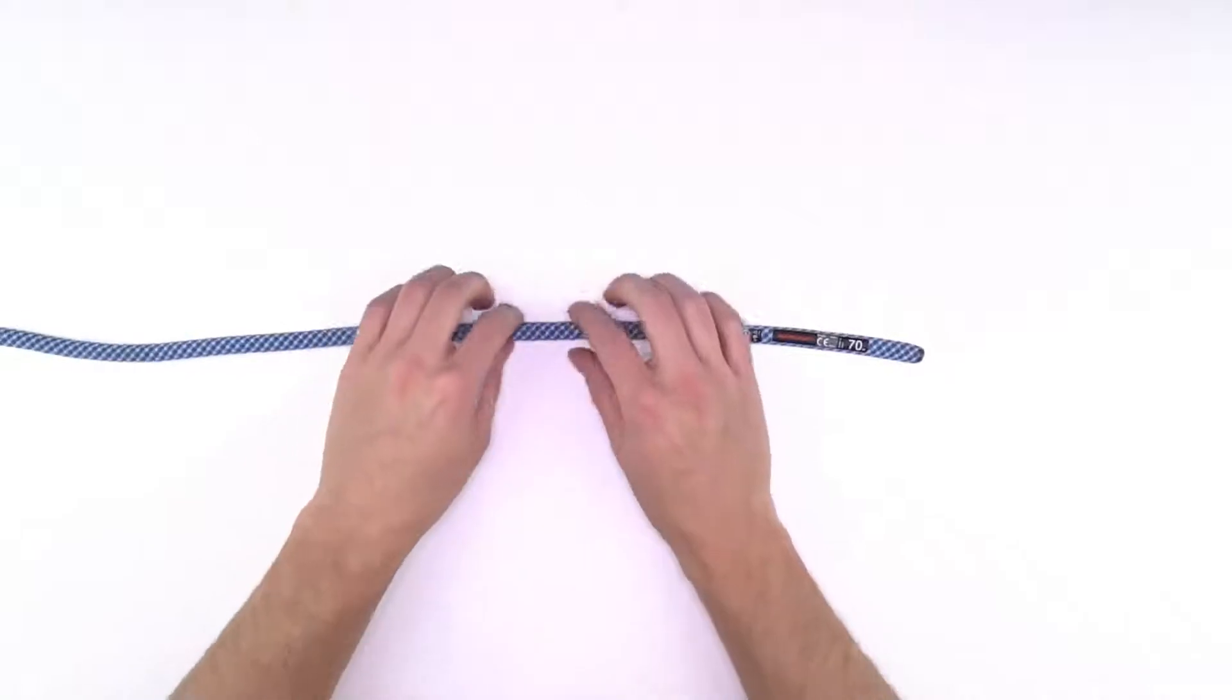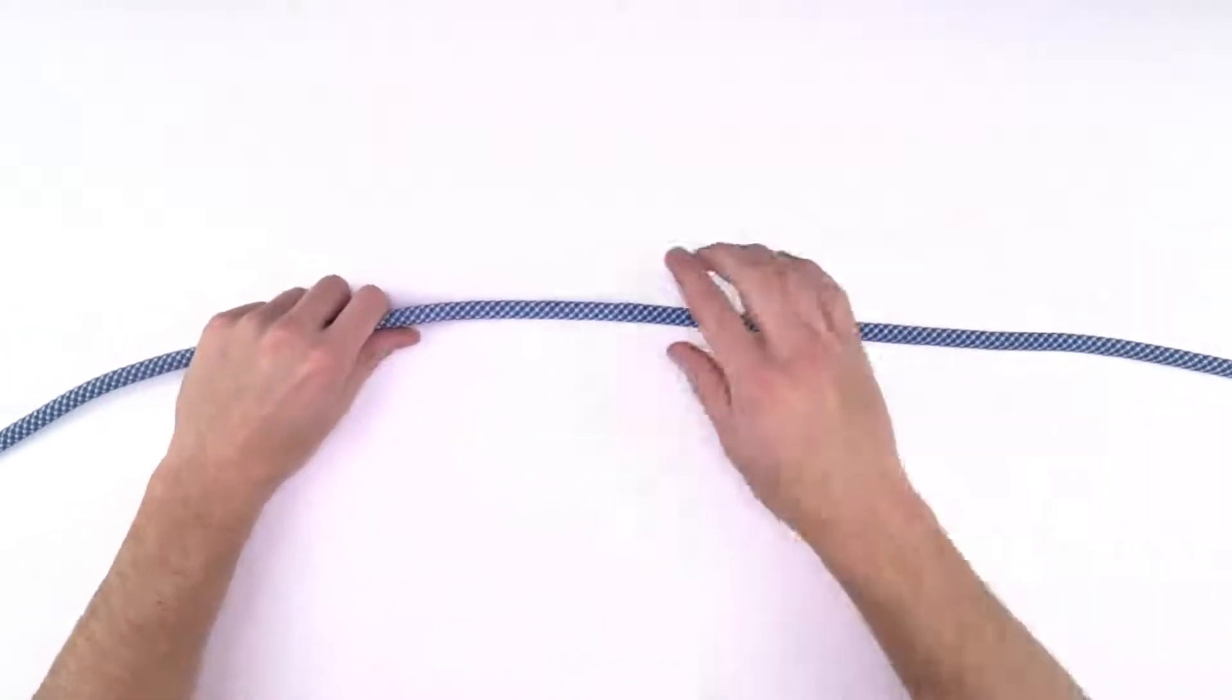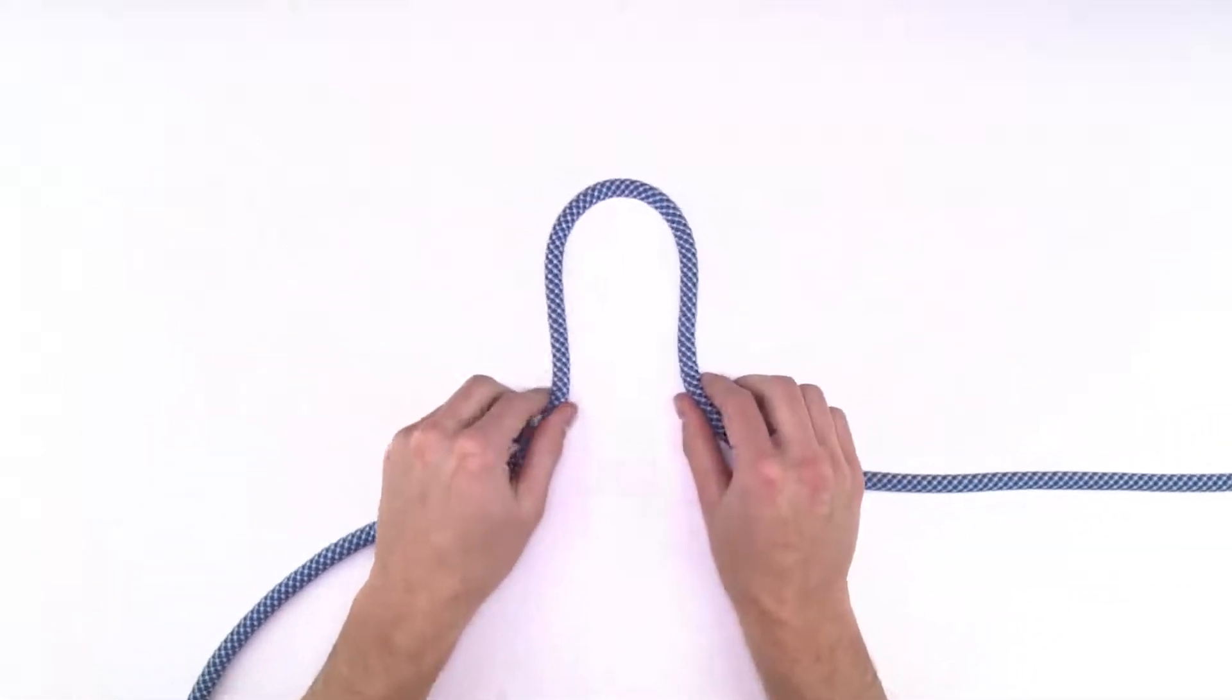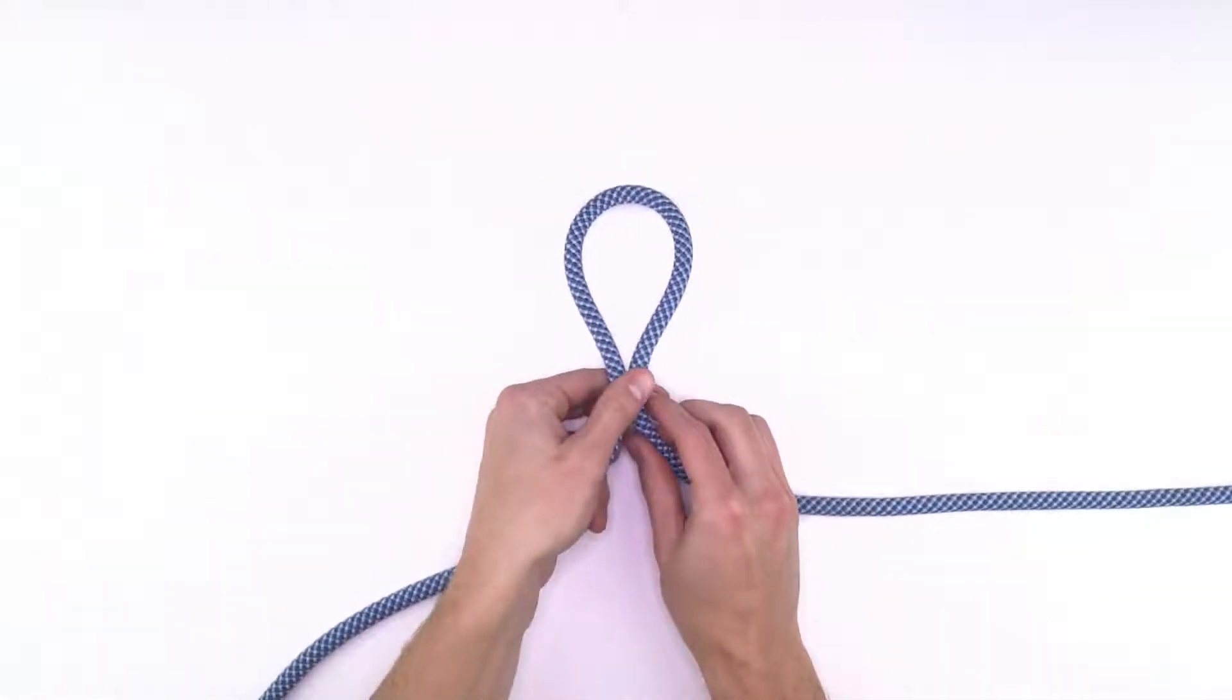First, grab one end of the rope and measure out about an arm's length. Drop the tail end of the rope and create a bite. A bite is another name for bend.